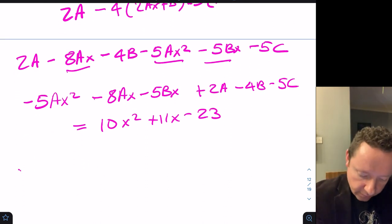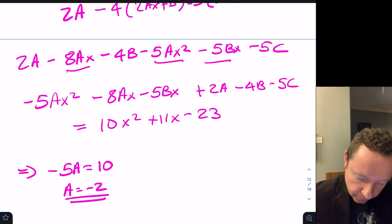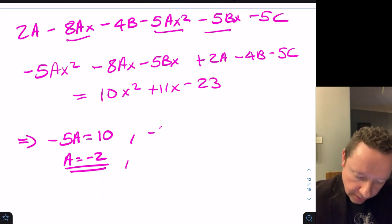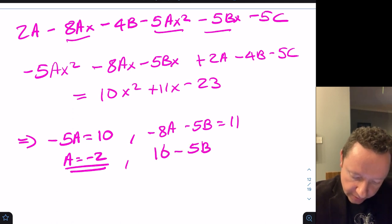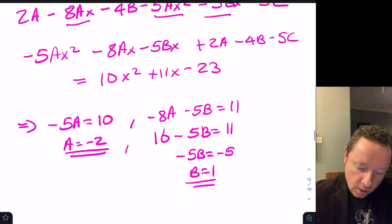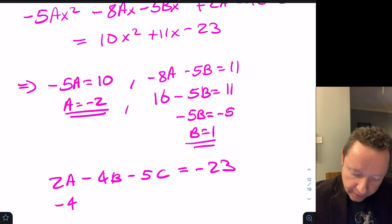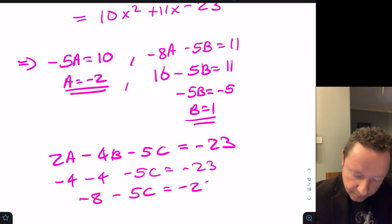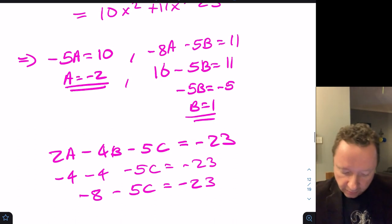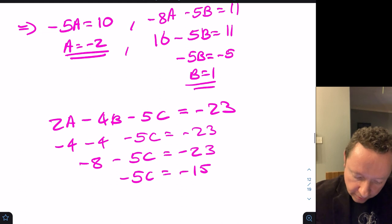Equating coefficients: x² gives minus 5a equals 10, so a equals minus 2. X terms: minus 8(−2) minus 5b equals 11, so 16 minus 5b equals 11, giving b equals 1. Constants: 2(−2) minus 4(1) minus 5c equals minus 23, so minus 8 minus 5c equals minus 23, giving c equals 3.